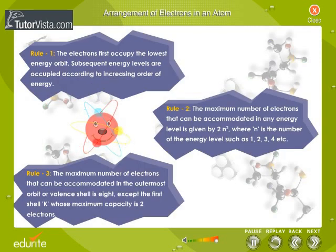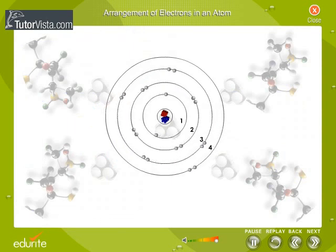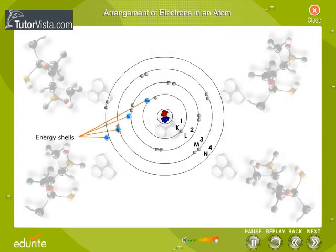Once these rules are satisfied, the complete arrangement gives the electronic configuration of an atom. Electrons revolve around the nucleus in definite circular orbits called energy shells. They are numbered as 1, 2, 3, 4, or designated as K, L, M, N, etc.